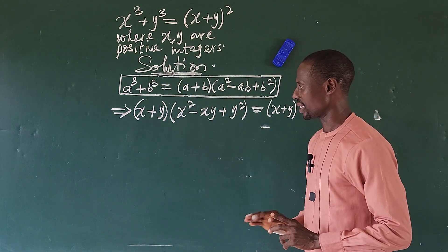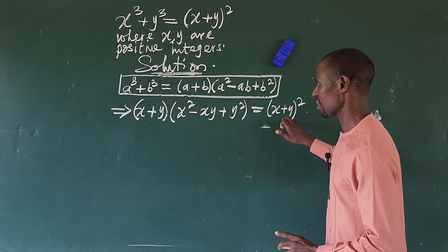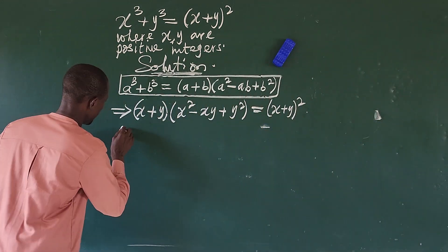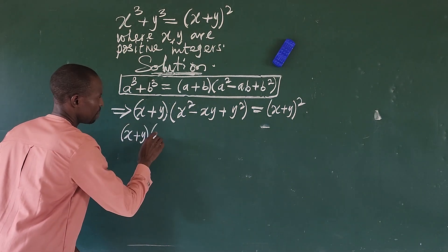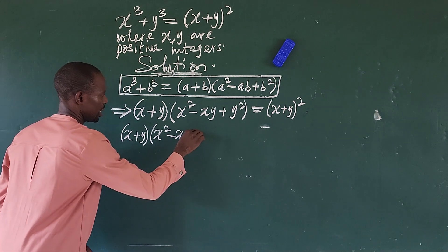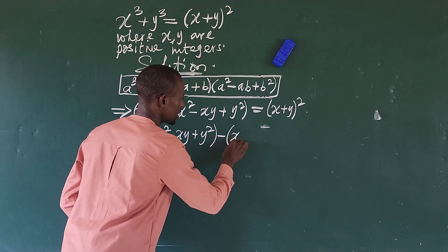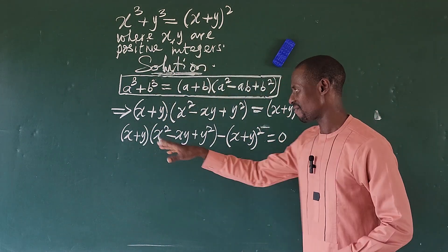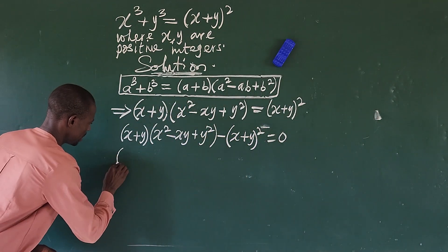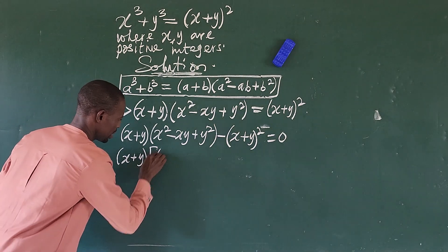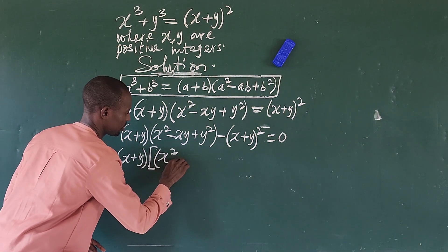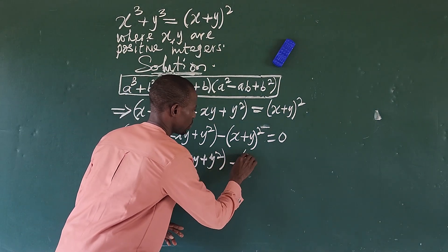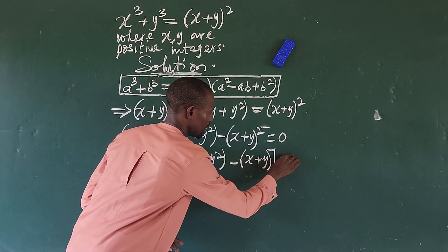Now x plus y appears on both sides. So let's move the right-hand side to the left. This gives us bracket x plus y close bracket times bracket x squared minus xy plus y squared close bracket minus bracket x plus y close bracket squared equal to 0. We can now factor out the common term x plus y from the expression.